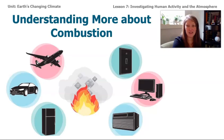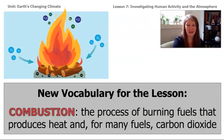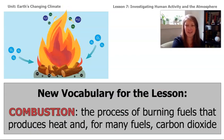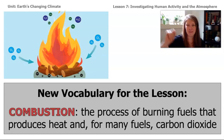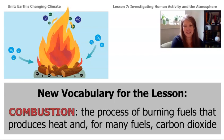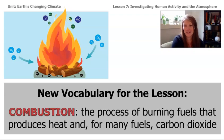From that video, we learned a new vocab word: combustion. Combustion is the process of burning fuels that produces heat, and for many fuels, carbon dioxide. So now we can see why human activities on our planet seem to increase the amount of carbon dioxide in the sim. But what about methane? We definitely got some clues that methane increased as the amount of livestock increased on our planet in the sim. But why?